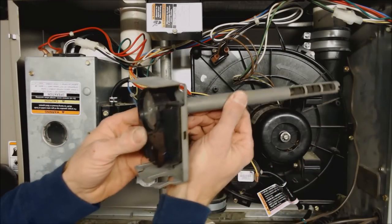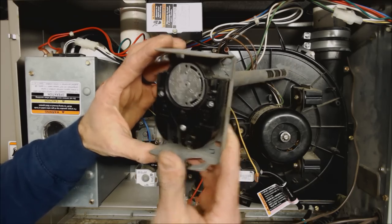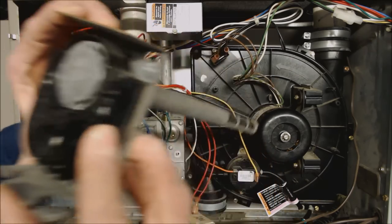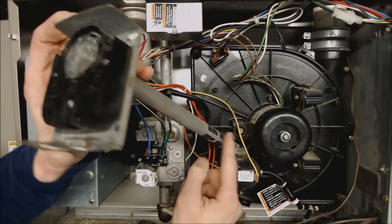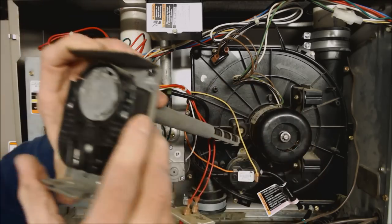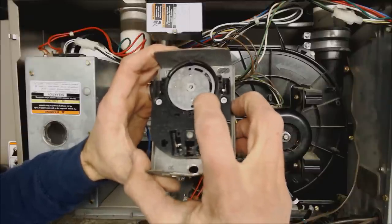Issue number two could be if you have an older furnace with a fan limit control such as this right here, you actually have three settings on this fan limit control. And this rod right here sticks into the heat exchanger and it has bimetal. And the bimetal, as it heats, it twists. So there's three settings right here. One, two, and three.